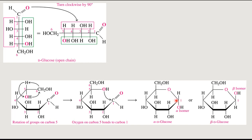The hydroxyl group has two choices: it can come below the ring in our Haworth projection, or above the ring. If it is below the ring, we call it the alpha isomer. If it's above the ring, we call it the beta isomer.